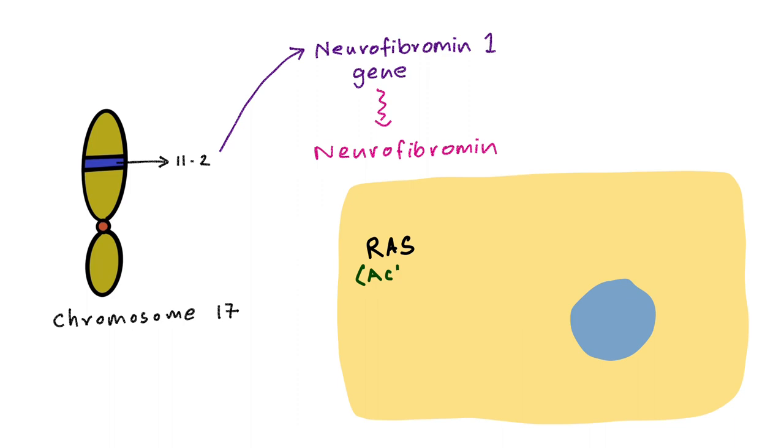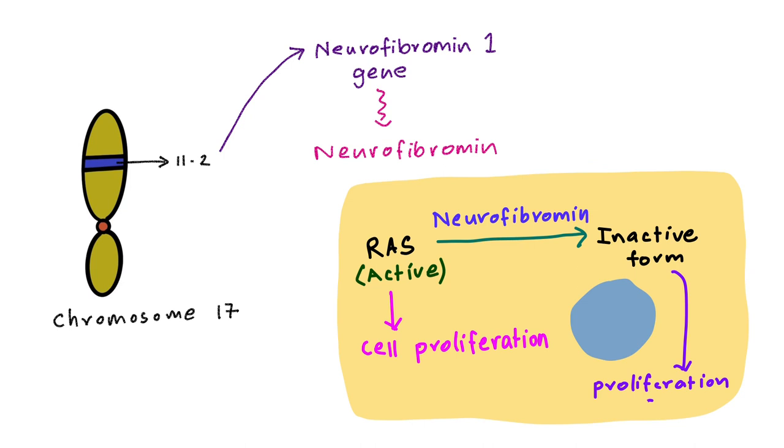Therefore, neurofibromin acts as a tumor suppressor. When there's a mutation in neurofibromin, it stops being a tumor suppressor. This makes the cell undergo unsuppressed proliferation.